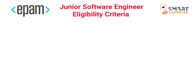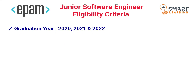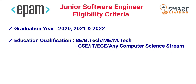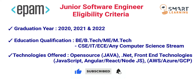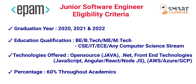Now let me share the eligibility for the Junior Software Engineer role. First, graduation year must be 2020, 2021, or 2022. Education qualification must be BE, BTech, ME, or MTech from domains like CSC, IT, ECE, or any computer science stream. Coming to the technologies, they are offering: open source Java, .NET, front-end technologies like JavaScript, Angular, React, or Node.js, and cloud technologies like AWS, Azure, or GCP. You also need a minimum 60% throughout your education.